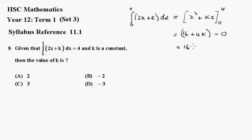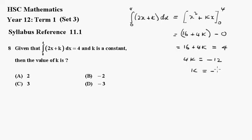So 16 plus 4k must equal 4. So 4k equals minus 12, so k is equal to negative 3, and that is d.